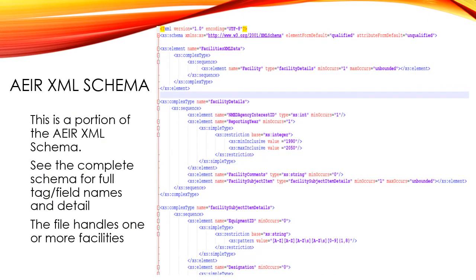What you see here is the first part of the AEIR XML schema file. It lists all the facility data, where you can specify more than one facility per file. Within each facility, you can list the details including the agency interest ID, the reporting year, comments, and the various set of subject items. Each subject item will detail the equipment ID, designation, and any other information including emissions related to that particular piece of equipment. Please see the complete schema for full tag and field names and details.